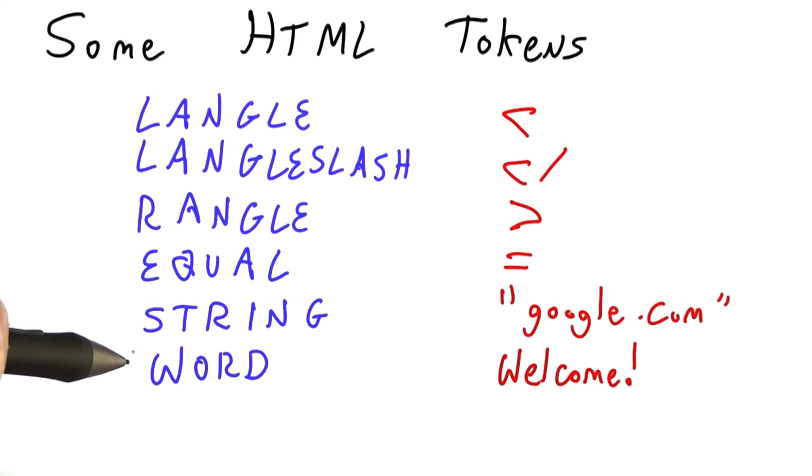Here, I've written six HTML tokens, giving them names on the left and examples on the right. Now, the naming of tokens is a bit arbitrary. In general, though, tokens are given uppercase names to help us tell them apart from other words or variables.